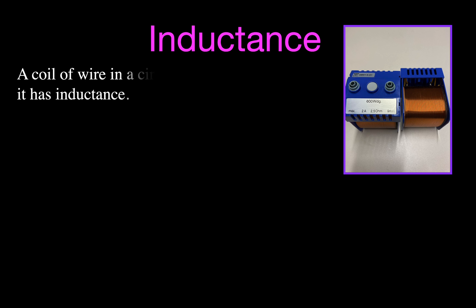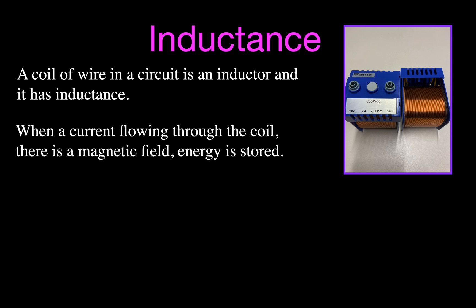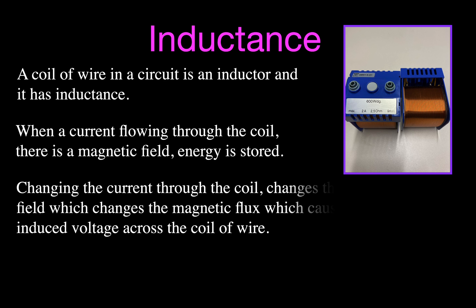What is inductance and what is an inductor? An inductor is simply a coil of wire. You take a wire, make it into a coil, and you have an inductor. That coil of wire in a circuit is an inductor, and it has inductance. If you pass a current through that coil of wire, there will be a magnetic field inside the coil, and energy is stored inside that magnetic field.